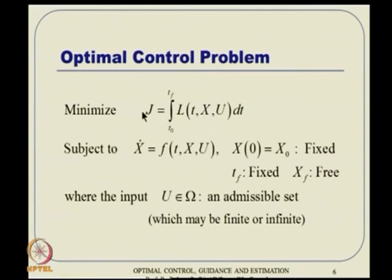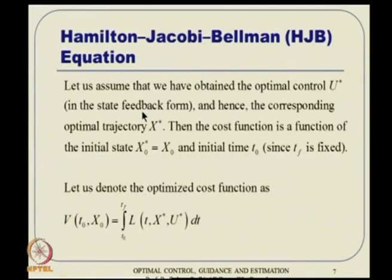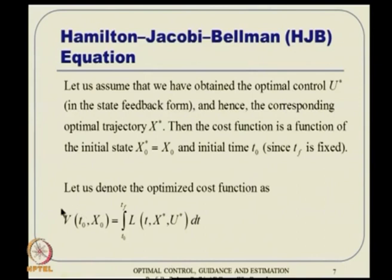This optimized cost function V(t₀, x₀) can be interpreted as: x₀ is my current state and t₀ is my starting time — wherever I am, that is my t₀. So I want to interpret the entire problem as a function of initial time and initial state. Everything else is evaluated such that only t₀ and x₀ remain as free variables.